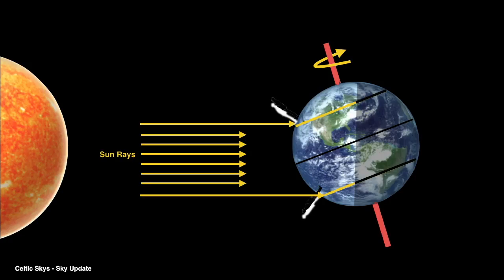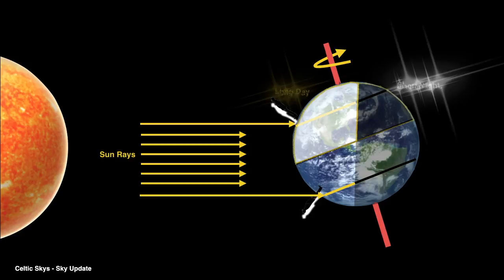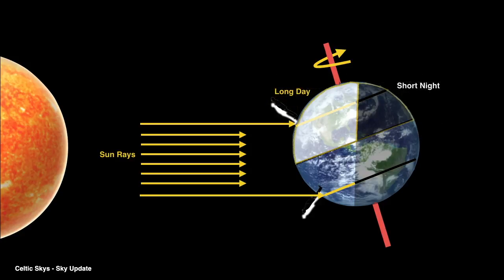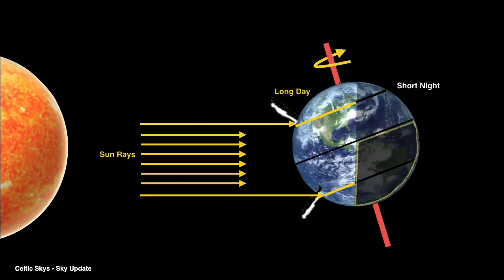Consider two people, one standing in the Northern Hemisphere and one in the Southern Hemisphere. As the Earth rotates about its axis, they both spend time in the light — daytime — and in the dark — night time. However, as you can see, in the Northern Hemisphere more time is spent in the light than in the dark, meaning the days are longer and the nights are shorter. Conversely, in the Southern Hemisphere, the nights are longer and the days are shorter.